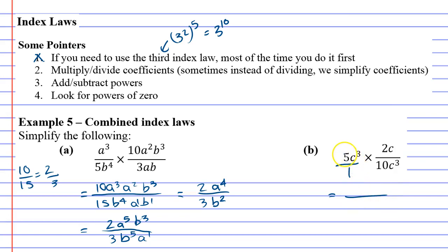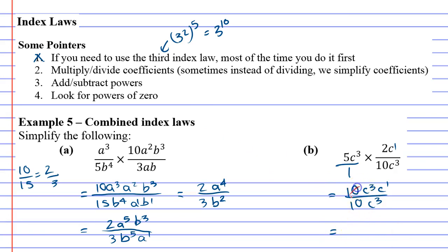So we're going to combine it and go: 5c cubed times 2c — 5 times 2 is 10, and then we've got c to the power of 3 and c to the power of 1 next to each other. Looking at the denominator, 1 times 10 is 10, and then we've got c to the power of 3. If we look at 10 over 10, when they're both the same we can cancel them. We can also cancel the two c's to the power of 3, which leaves us just c to the power of 1.